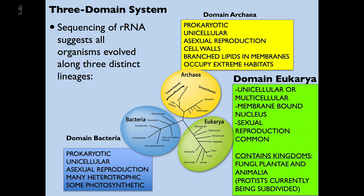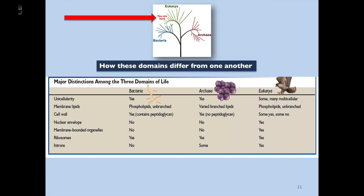Domain Eukarya is everything else — things we're most familiar with. Organisms can be unicellular or multicellular and have a membrane-bound nucleus holding all the DNA and chromosomal material. Sexual reproduction is very common in eukaryotes. It contains the three kingdoms: fungi, plantae, and animalia. The protists are currently being subdivided into those three kingdoms. Here's another graphic showing our phylogenetic relationships — the bacteria went in one direction, archaea diverged sometime later, and the eukaryotes are further along with many different species and branches having occurred along the way.